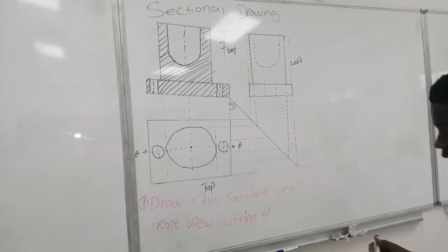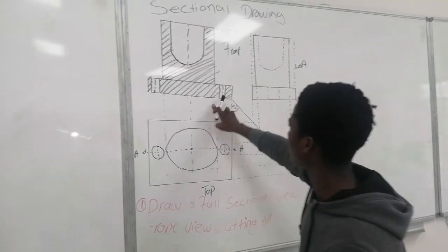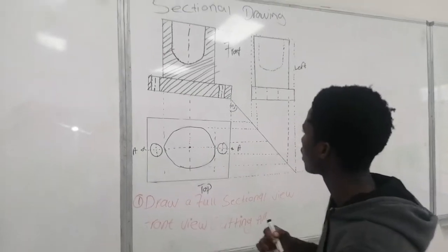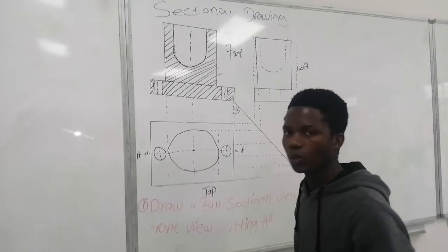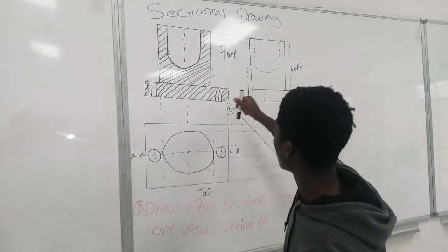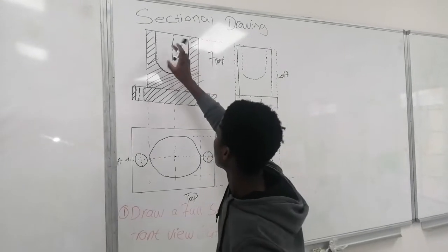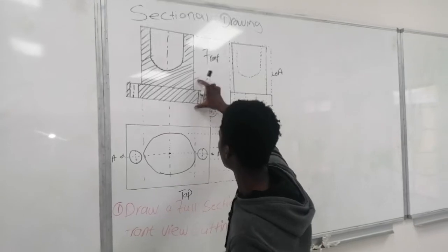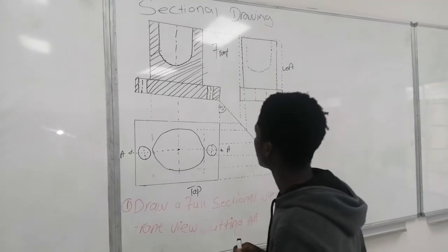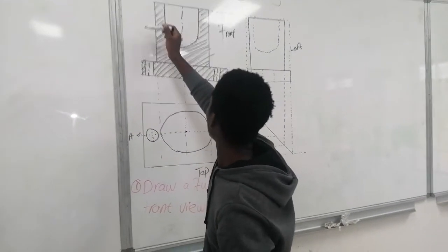We're going to section it like this and then we'll be done with this one. If we have a two-component part, it means our sectioning direction is going to change. For example, if maybe there's something here, we're going to change the sectioning direction. This is the same component going in the same direction of the section.